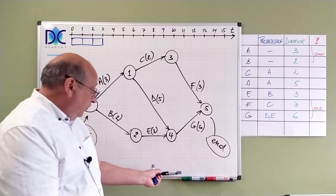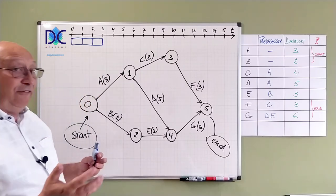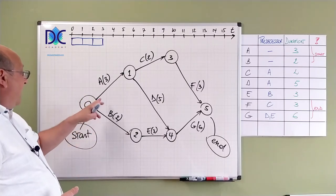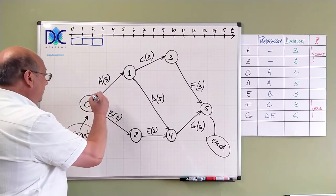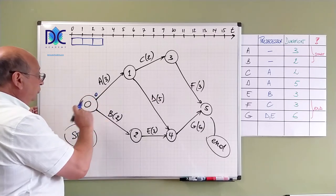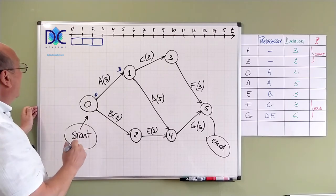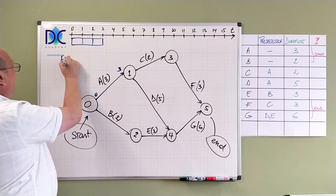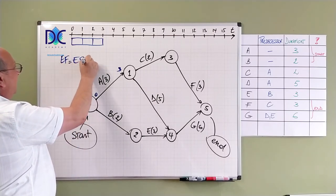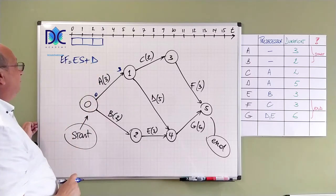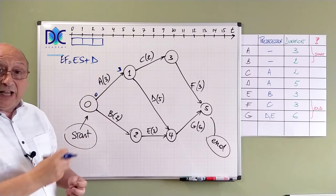Now the calculations. Well when we look at the calculations we have to see what's happening. A starts at zero. So we already know that. So the note here starts at zero. And finishes at three. So what we have is the early finish is early start plus the duration. Which is very easy to calculate.